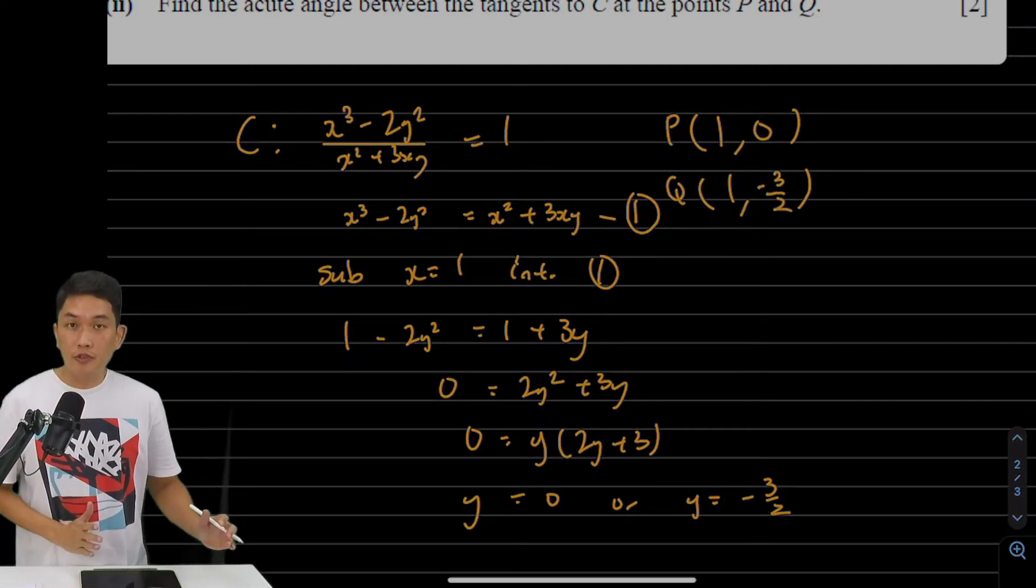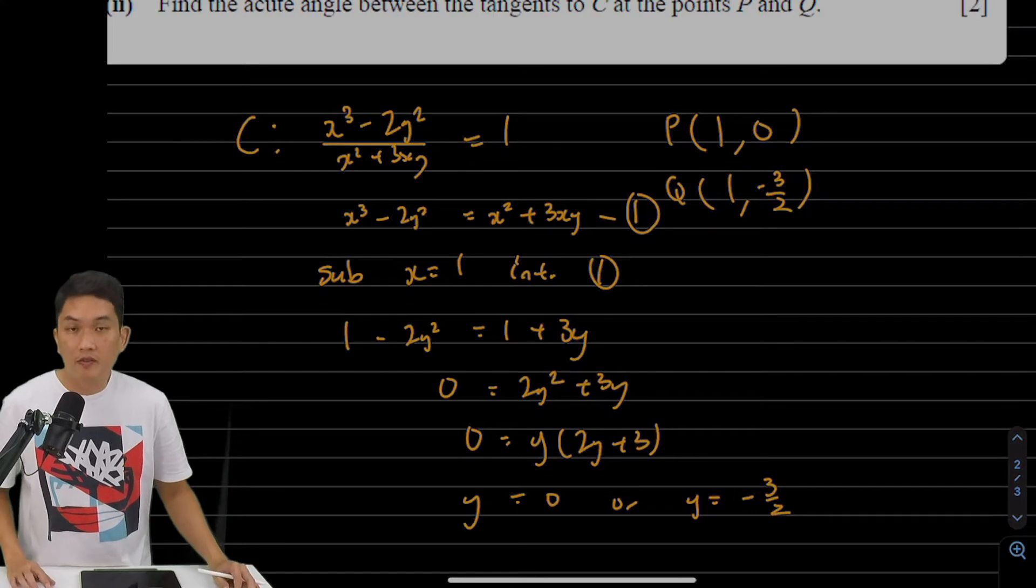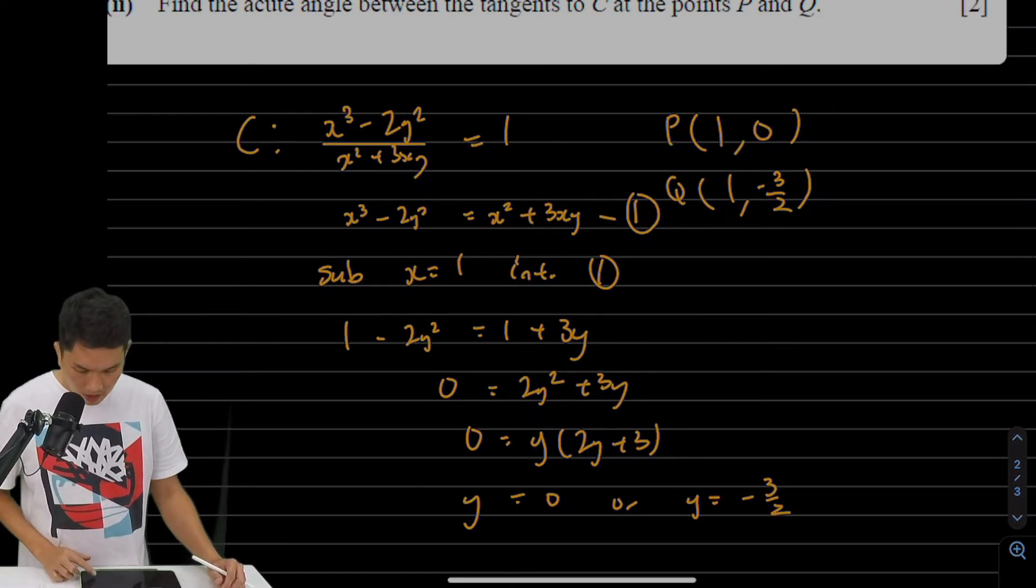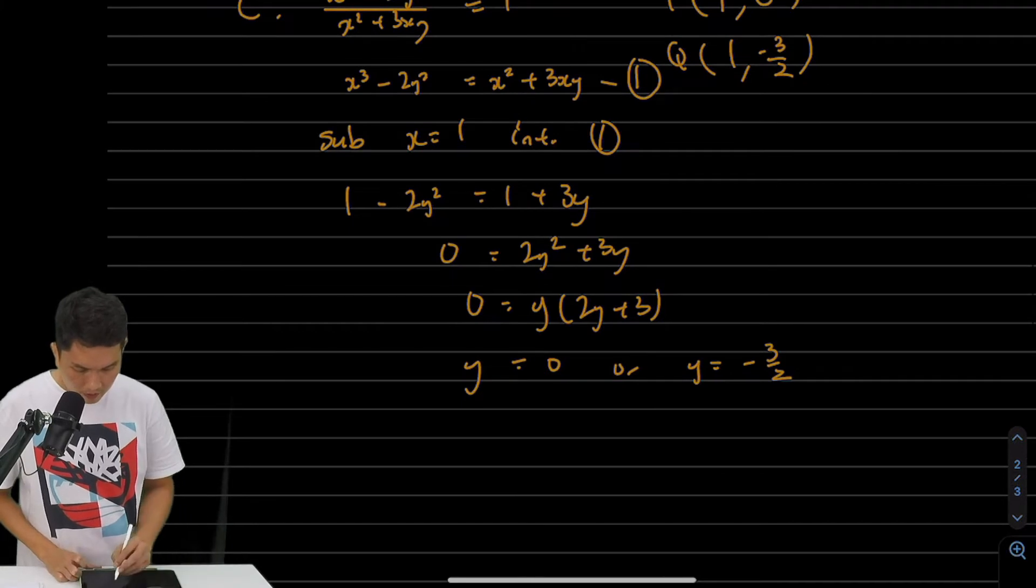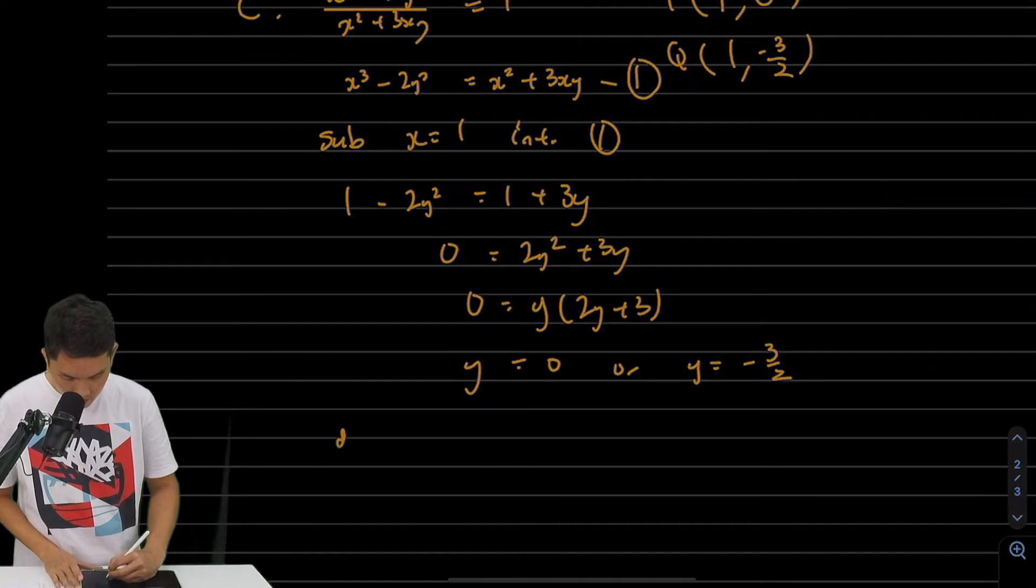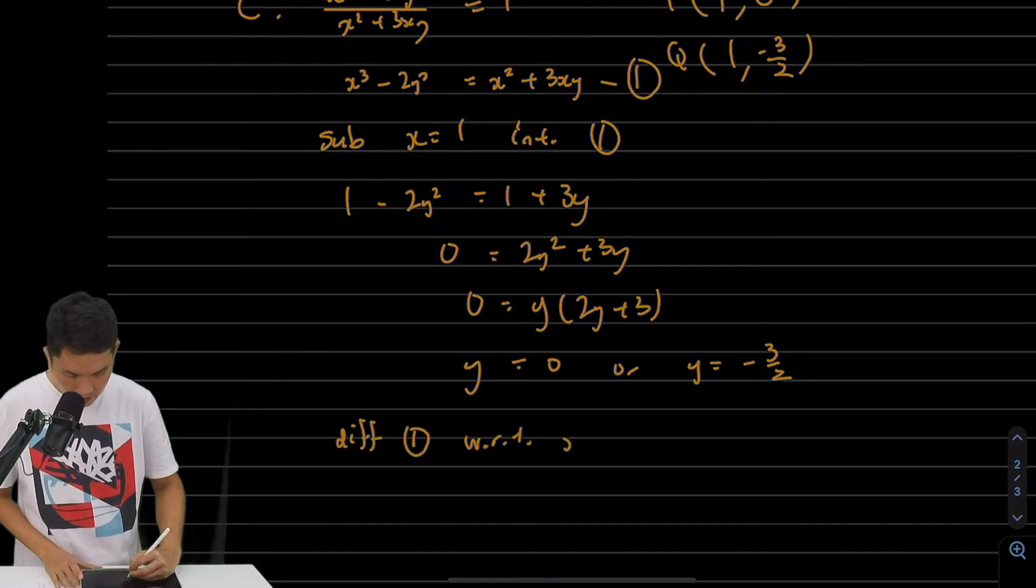It doesn't matter which one we label P or Q. P could be the one with -3/2, but I'll let it be this way. Next, we're going to differentiate equation 1 with respect to x, because I want dy/dx, the gradient function.